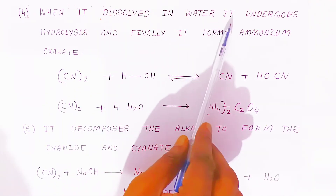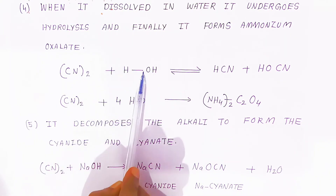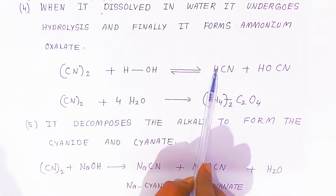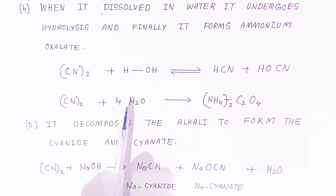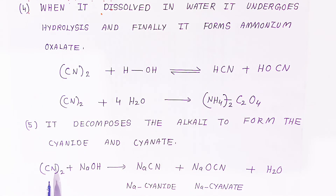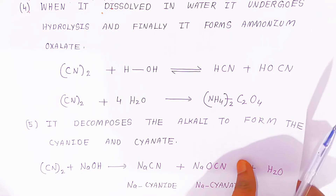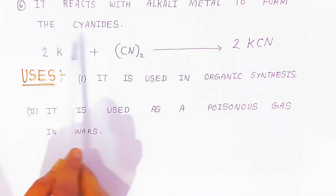When cyanogen is dissolved in water, it undergoes hydrolysis and finally forms ammonium oxalate. Cyanogen dissolved in water first forms hydrogen cyanide and cyanic acid, and when heated with four water molecules it produces ammonium oxalate. When cyanogen is added to NaOH (alkali), it forms sodium cyanide and sodium cyanate, along with water. The formation of cyanate is due to the presence of oxygen.